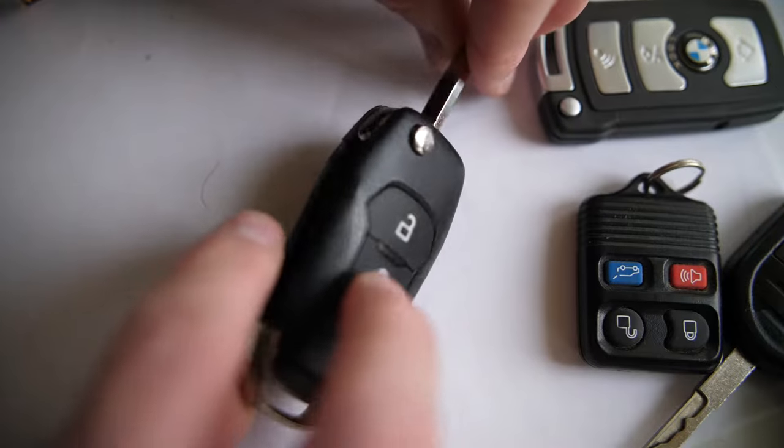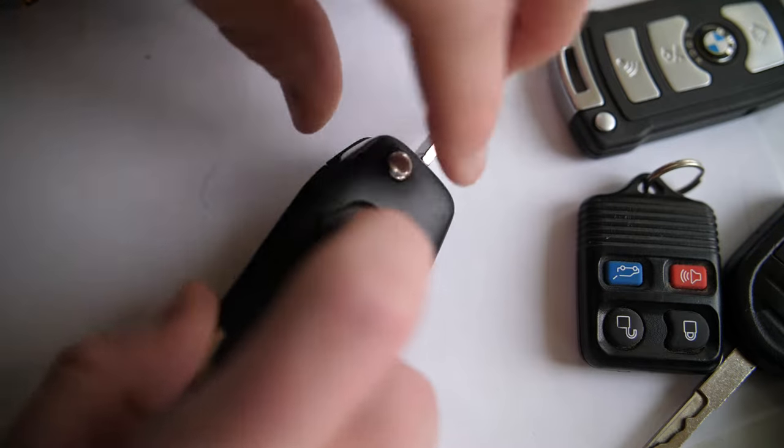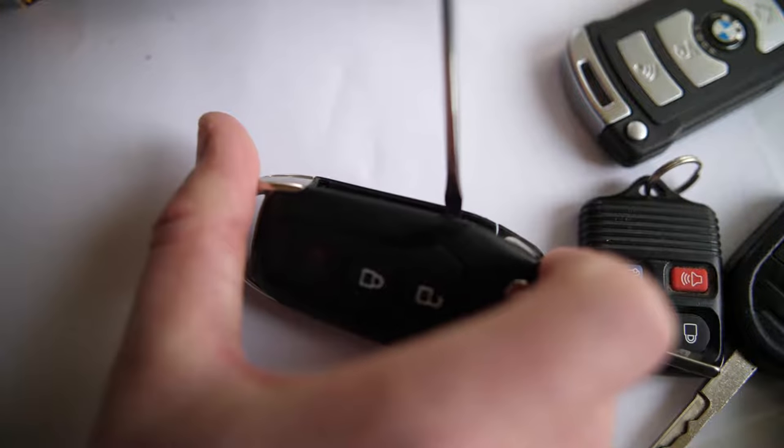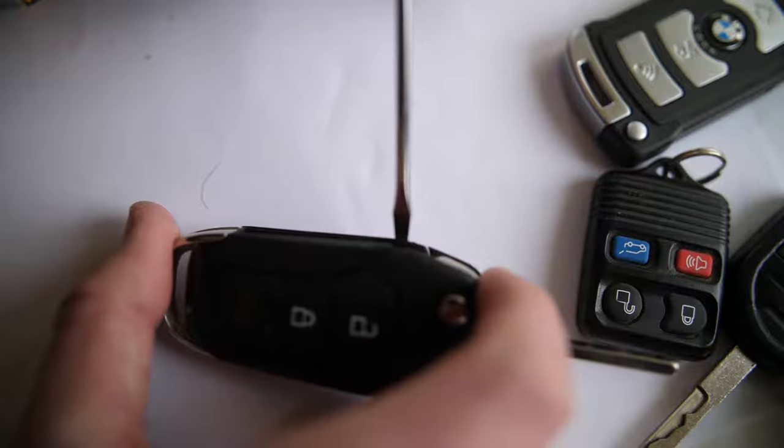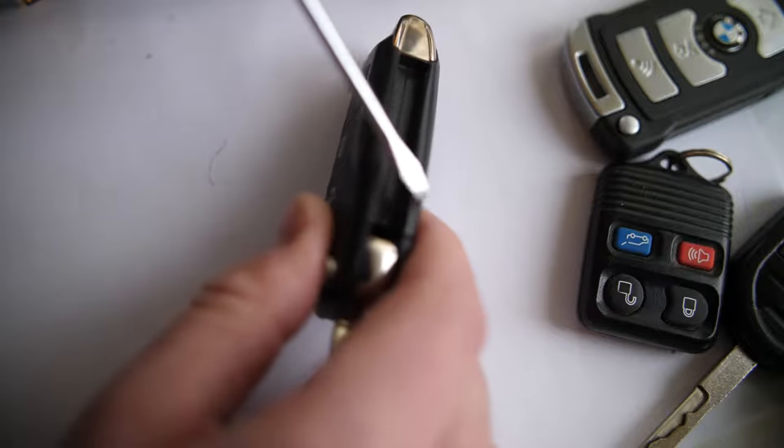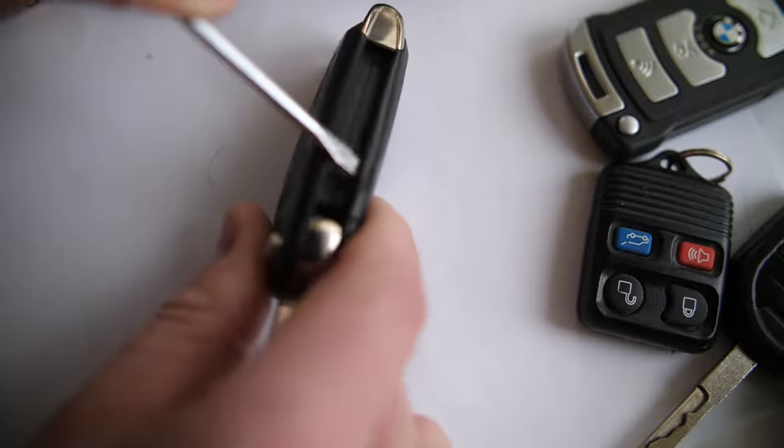And again, the key here, the key to the key, is in the middle here you'll usually see some indentation. So on this one it's at the base here, near where the key flips out. There's a little indentation and it allows you to get some access to pry this back off.